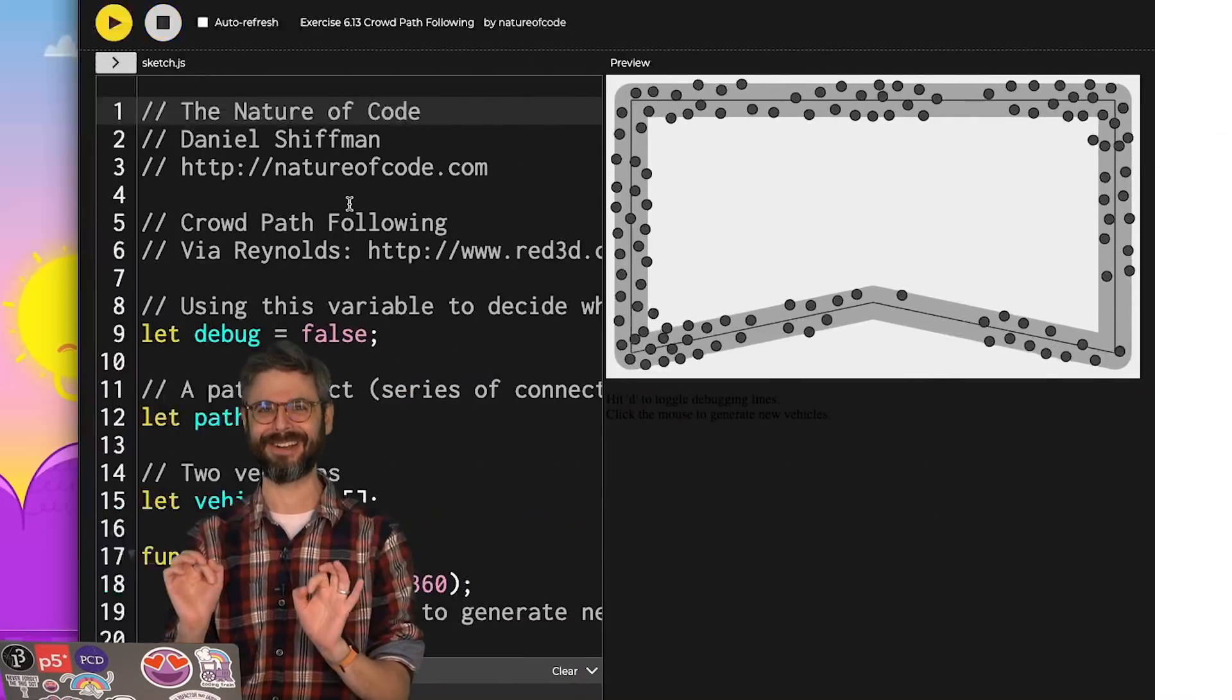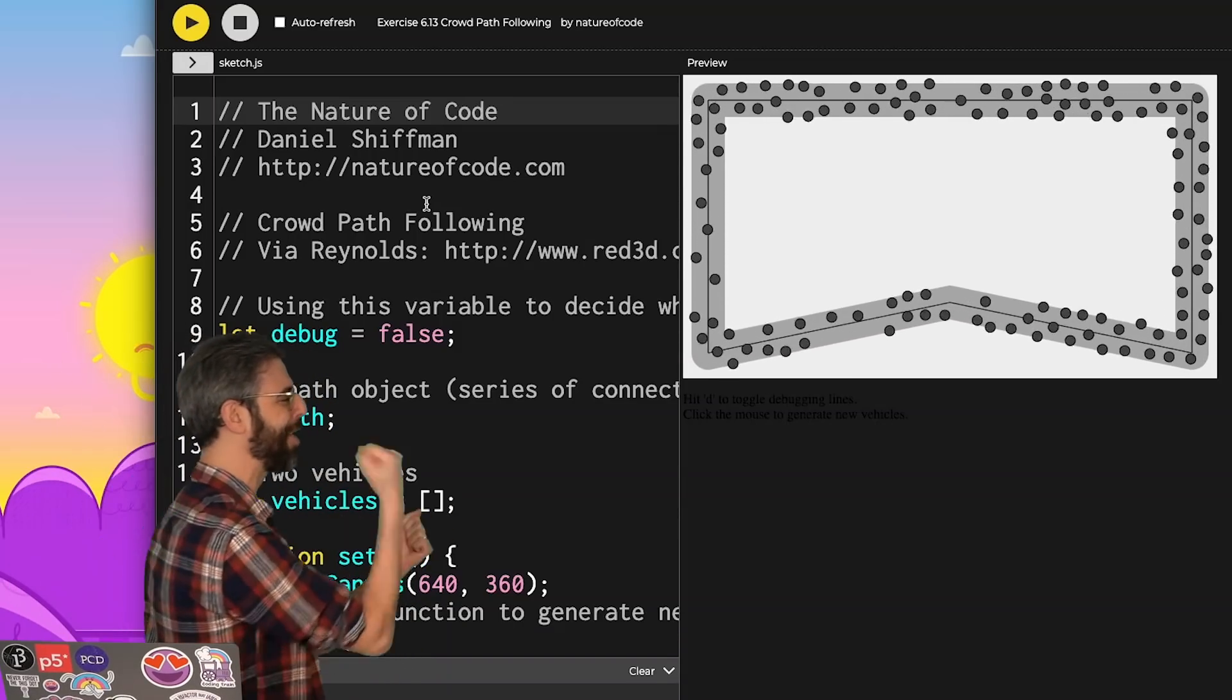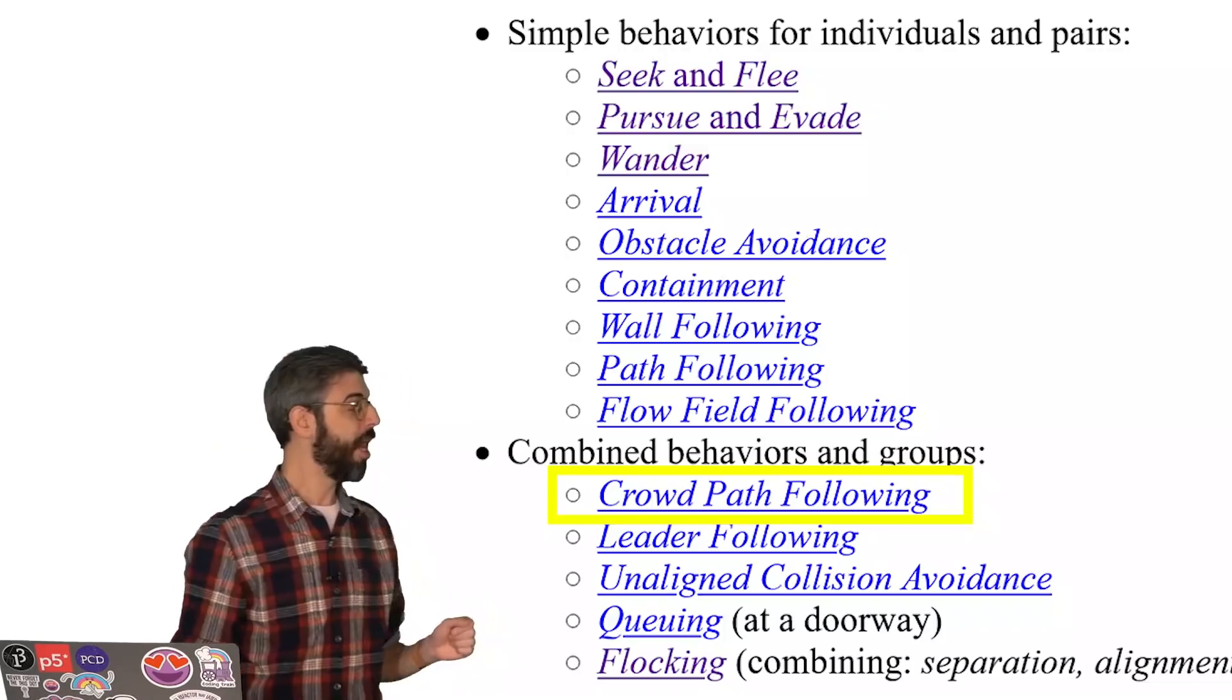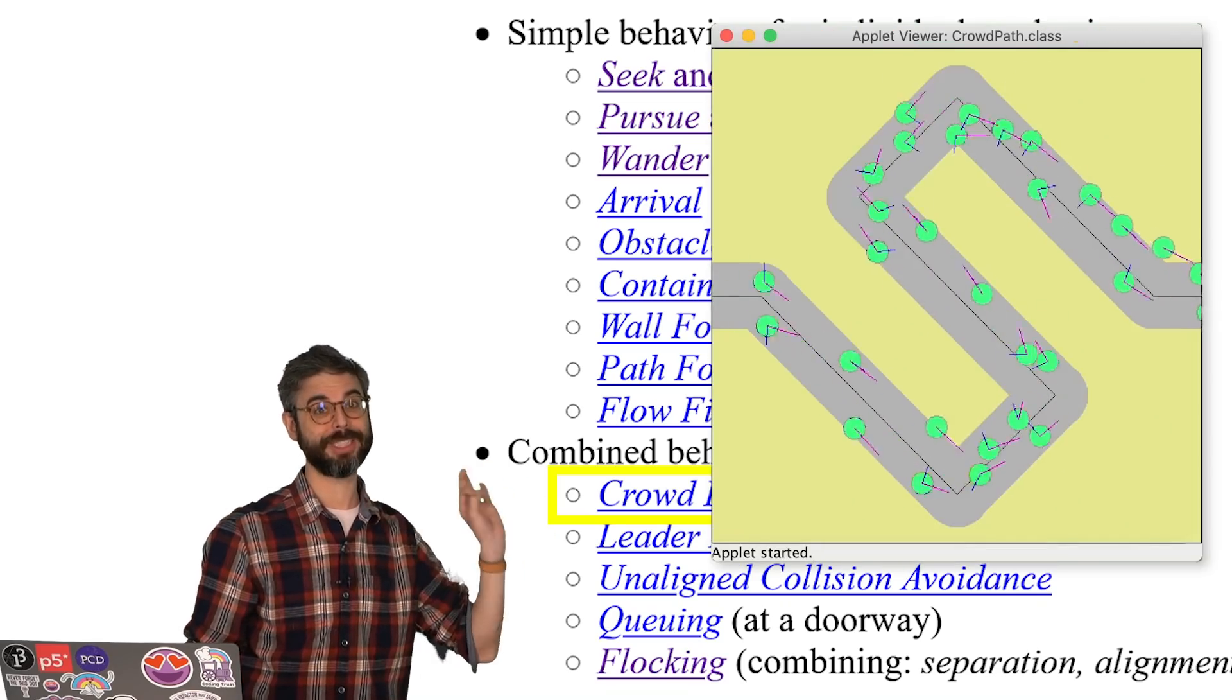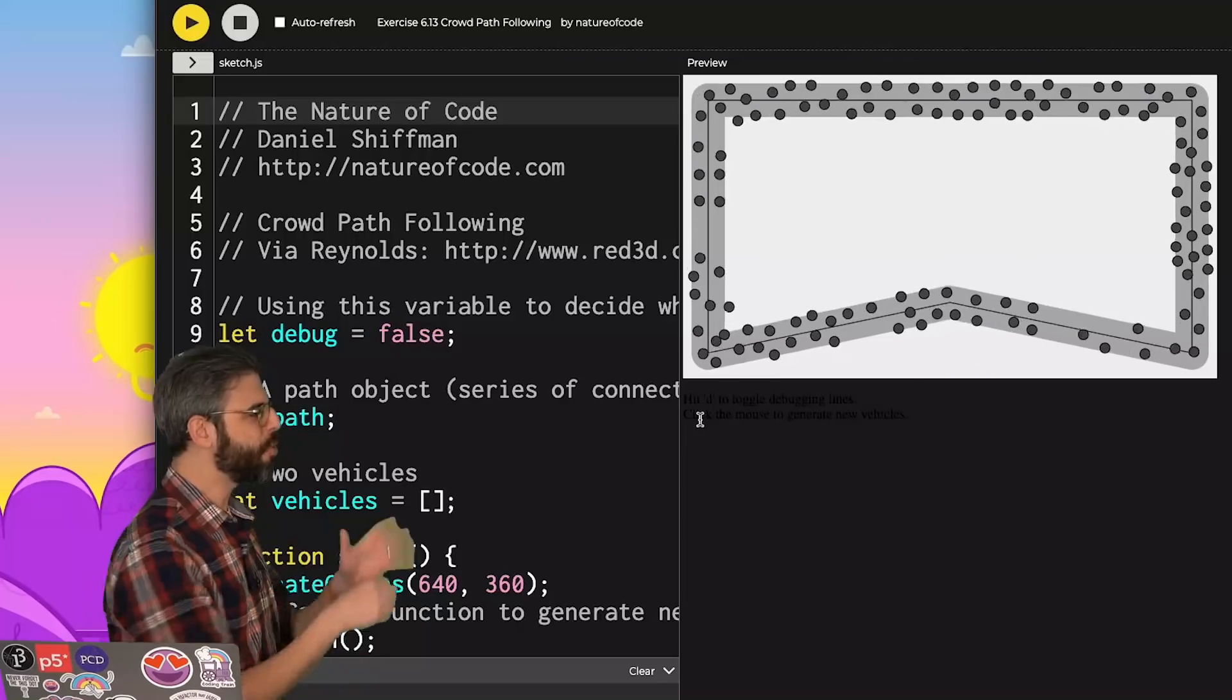However, it is here in this section because I eventually want to make this example. This is crowd path following, a demonstration of one of the combined behaviors in Craig Reynolds' Steering Behaviors for Autonomous Characters paper from 1999.